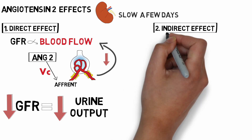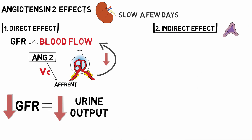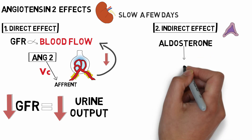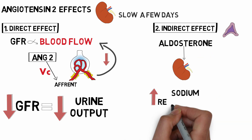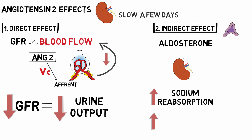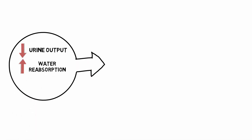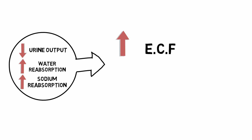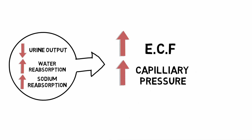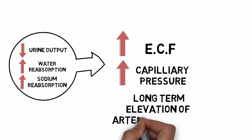The second is the indirect effect, in which angiotensin 2 acts on the adrenal gland and releases aldosterone. Aldosterone in turn acts on the kidney and increases sodium reabsorption as well as water reabsorption. So we have decreased urine output, increased water reabsorption, and increased sodium reabsorption. All these effects lead to an increase in the extracellular fluid of the body, an increase in capillary pressure, and a long-term increase in arterial pressure.